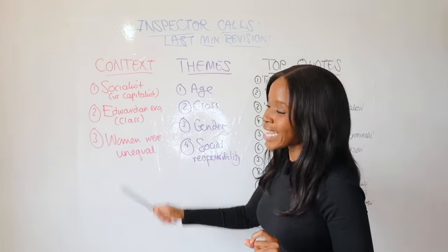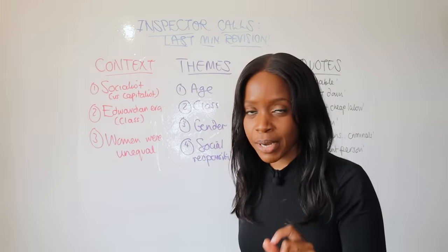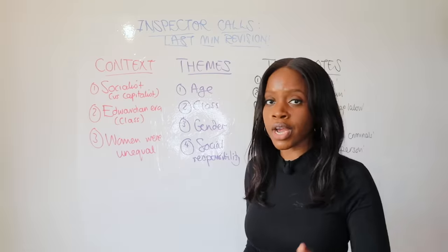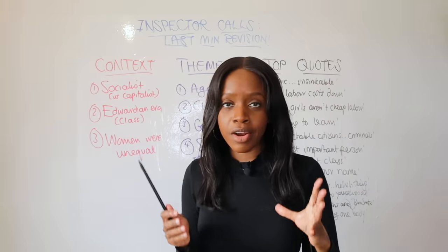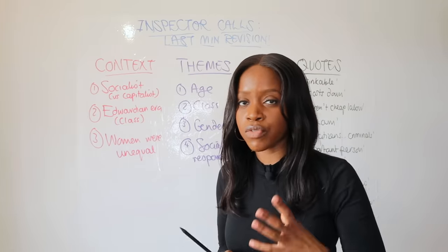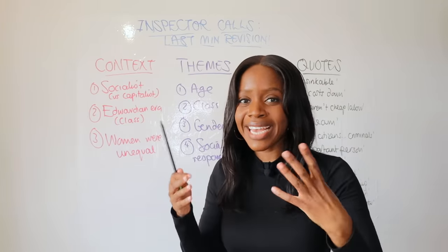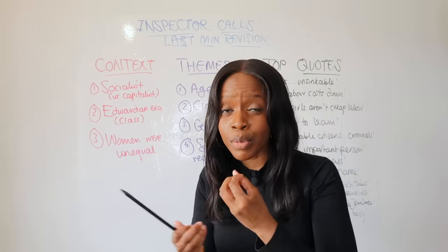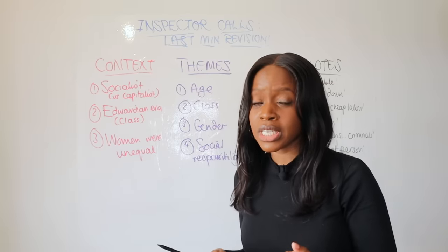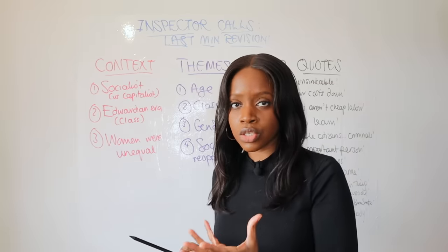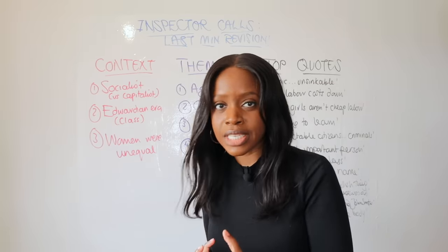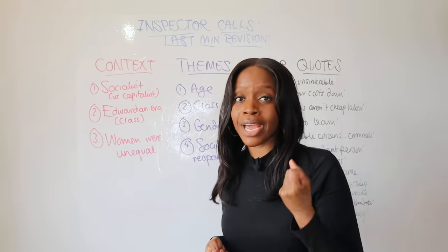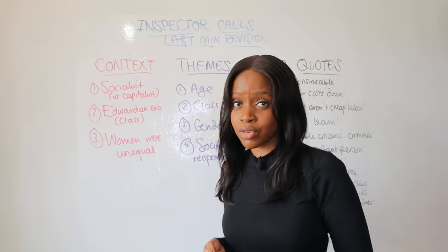The second context point: Priestley set the play in 1912, which is the Edwardian era. The Edwardian era had very deep class divisions, and Priestley is writing this play to illuminate and highlight these deep class divisions — to show us as the audience how devastating these class divisions were on people like Eva Smith and Daisy Renton.